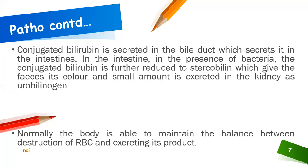The conjugated bilirubin is secreted into the bile duct, which deposits it into the intestines. In the presence of normal flora or bacteria found in the intestines, the conjugated bilirubin is further reduced to two forms: stercobilin, which is secreted in faeces and responsible for adding color to normal stool, and the other amount is excreted by the kidneys in urine, known as urobilinogen.